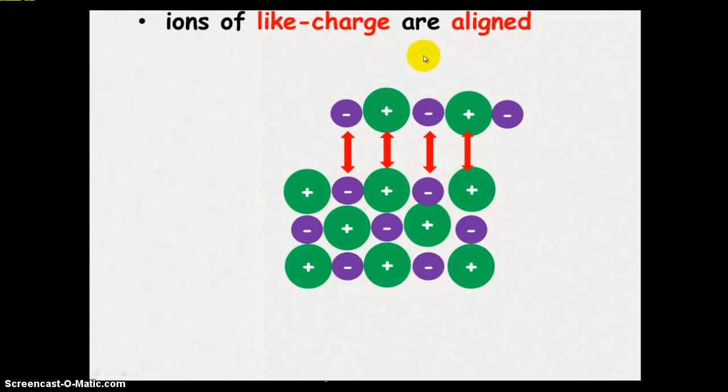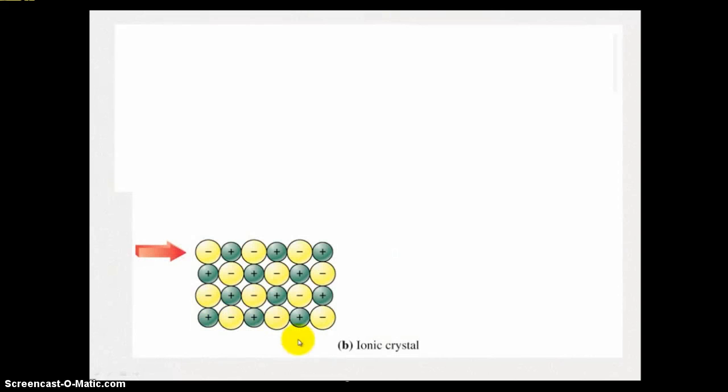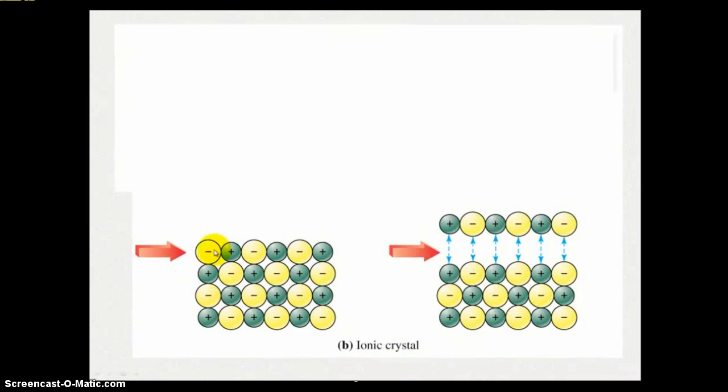Ions of like charges are aligned. When they're aligned, they repel each other, and it splits the crystal structure. So ionic compounds, like salt, are very brittle. Force is applied, and it breaks apart.